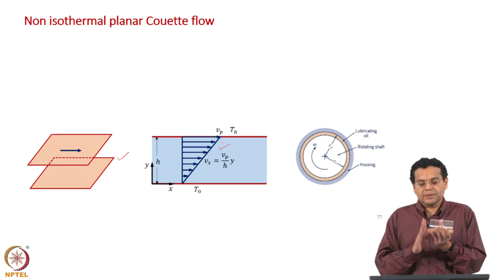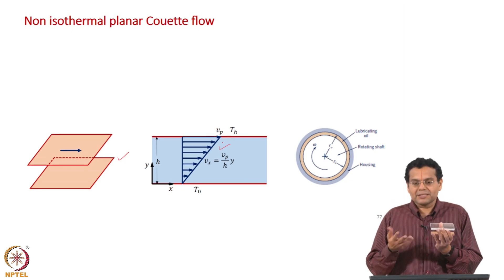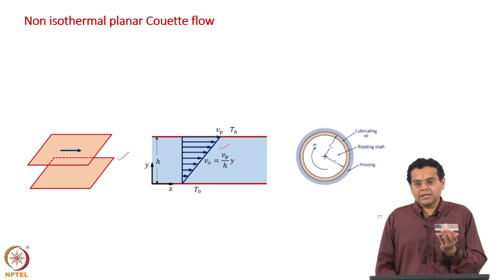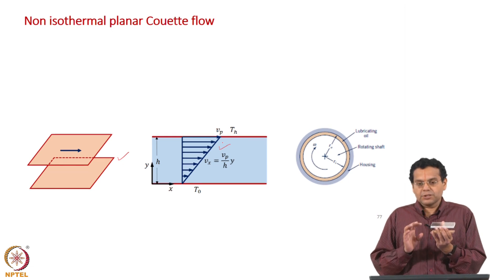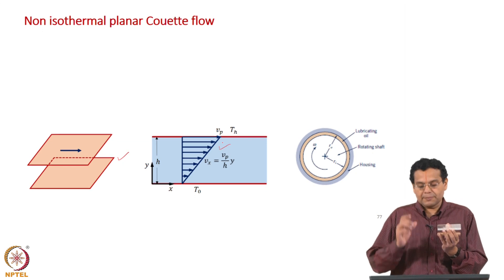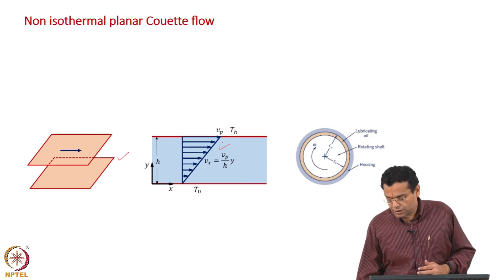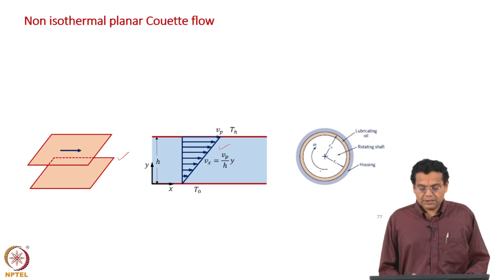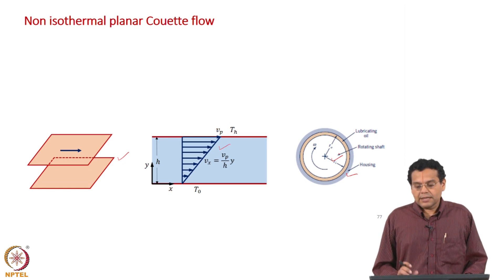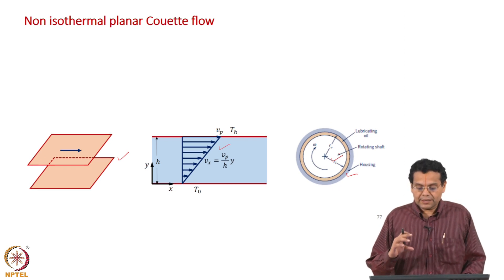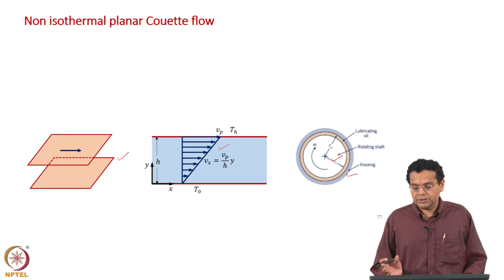Earlier, the top plate was set in motion but we never talked about temperature because our attention was on the velocity profile and the Navier-Stokes equation. Now we are considering a case where the top plate is moving, the bottom plate is stationary, and the bottom plate is at T naught while the top plate is at Tₕ — a higher temperature. This approximates flow between two coaxial cylinders as in a viscometer or shaft bearing, where the rotating shaft and housing are at two different temperatures, which is more realistic.